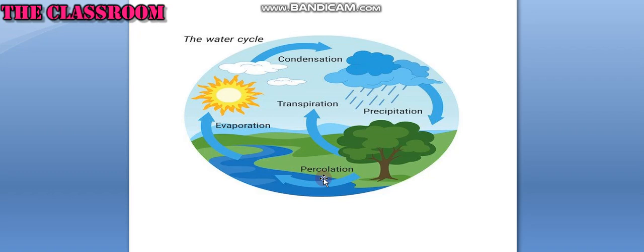Runoff is the water that is pulled by gravity across the land surface. The runoff is divided into surface runoff and base flow runoff.